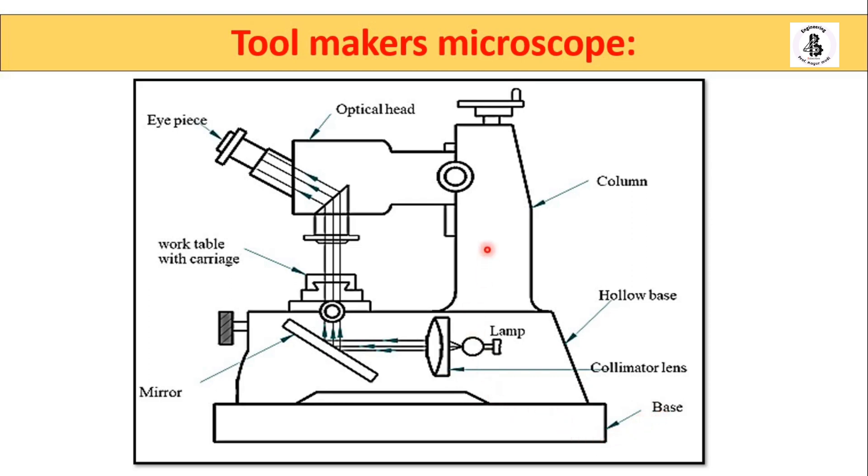For all the accessories like columns, lamp, optical head, and eyepiece onto that base. Onto the base, just you can see the column, it will be fixed at one of the ends.